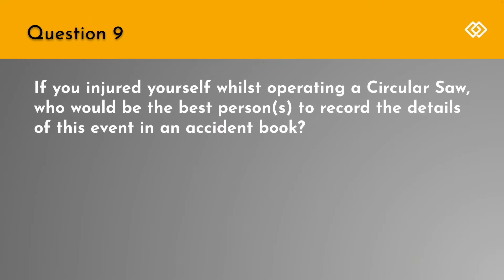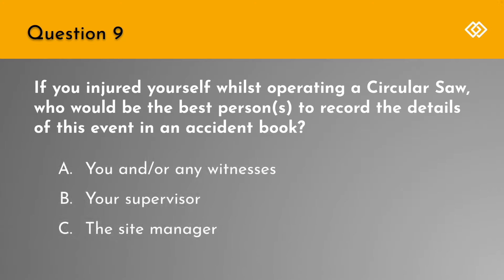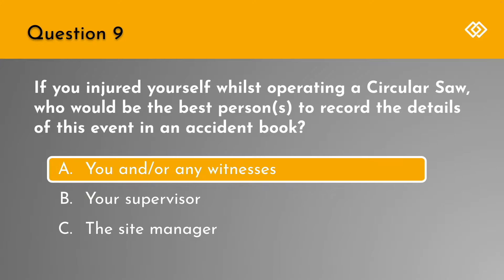Question 9. If you injured yourself whilst operating a circular saw, who would be the best person or persons to record the details of this event in an accident book? A. You and/or any witnesses. B. Your supervisor. Or C. The site manager. The correct answer is A. You and/or any witnesses.